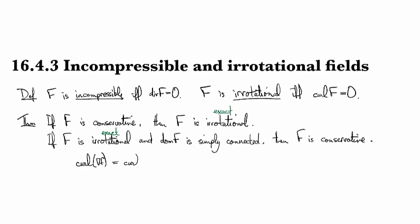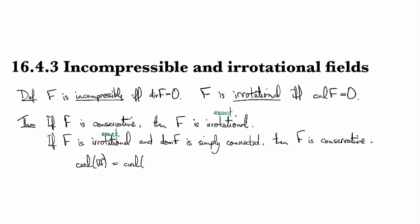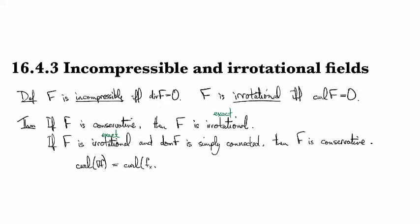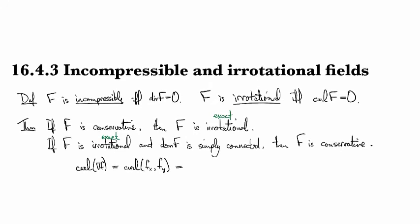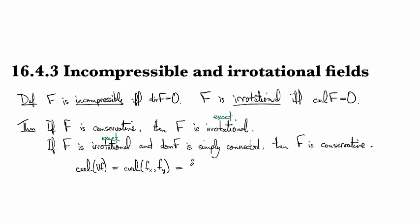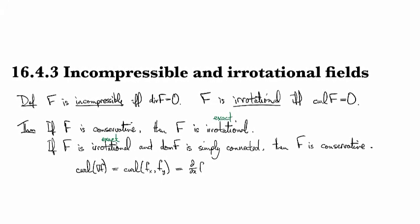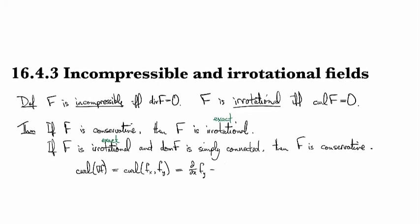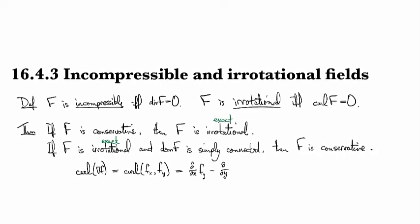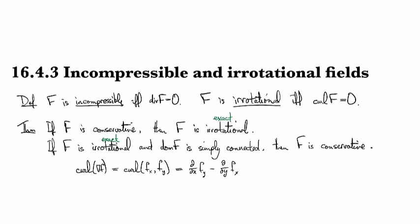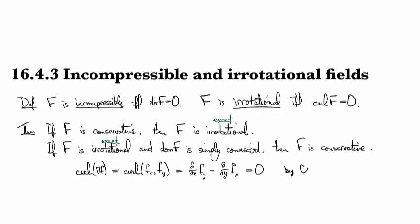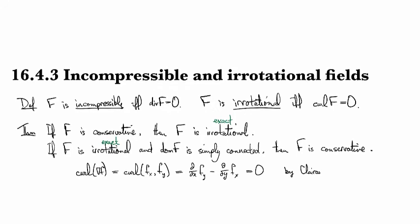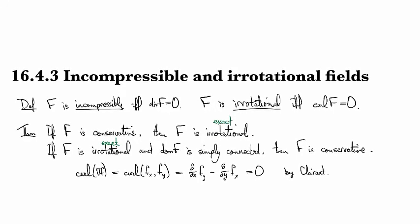Then we're looking at the curl of, well, a gradient looks like first partial derivative, comma second partial derivative. And so for the curl what we do is we take d/dx of the second coordinate and we subtract d/dy of the first coordinate, and then you can see that these are mixed partials. So this is zero by Clairaut's theorem.